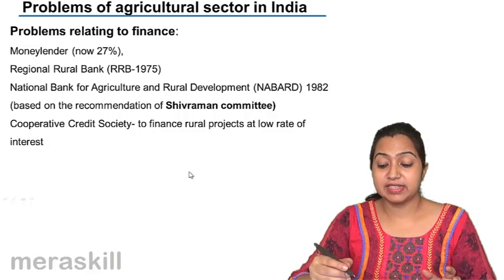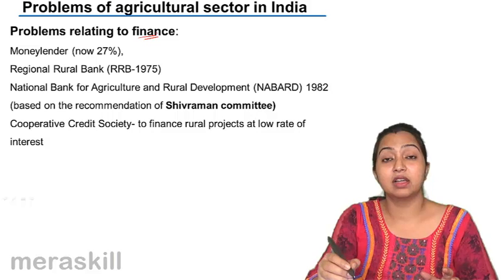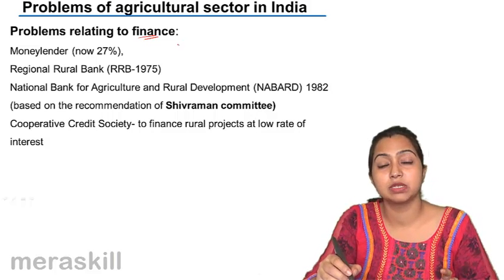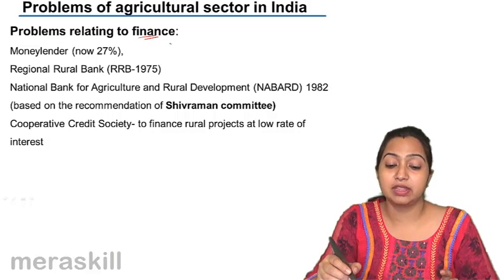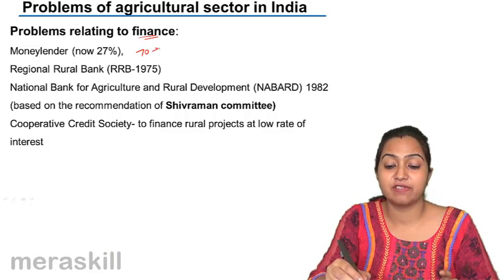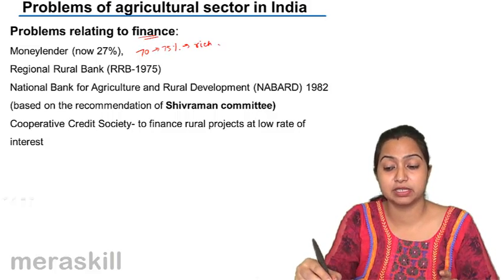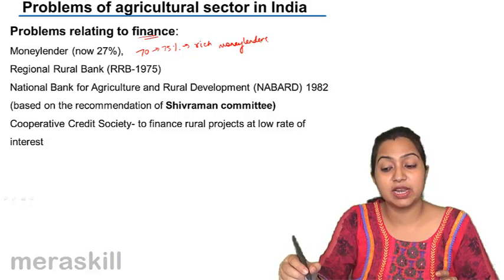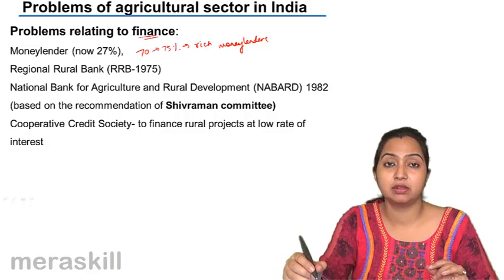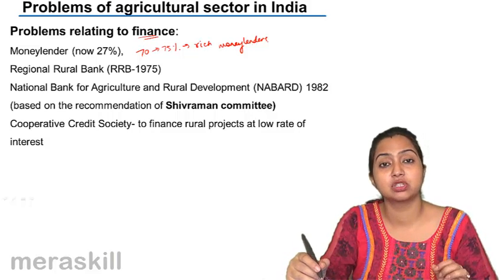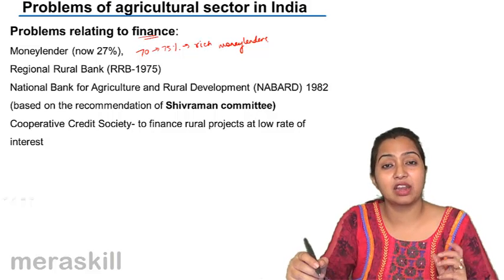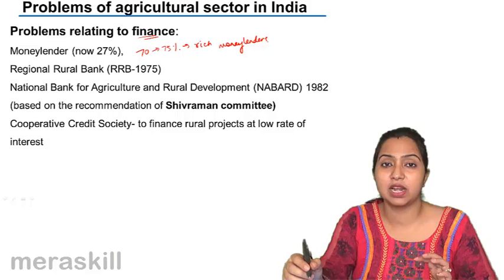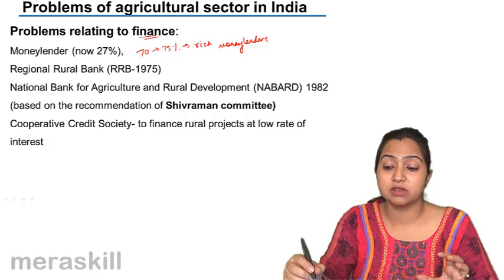The problem relating to finance is a major problem. Earlier, the main source of loans to farmers were rich money lenders of the villages, who provided nearly 70 to 75% of finances. They exploited the farmers by making illiterate farmers give thumb impressions on papers with unfavorable conditions, forcing transfer of land and charging high rates of interest.